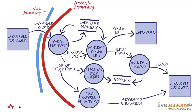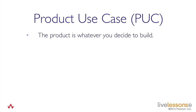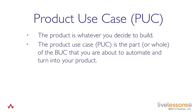I want to introduce a piece of terminology here: the product use case, or puck. The puck is whatever you decide to build — it's the part of the buck (the business use case we've been talking about) that you're about to automate and turn into your product. So we've got bucks and pucks. The buck is the business use case — the description of the work. The puck is the product use case, which is the part of the buck that you've decided to automate.